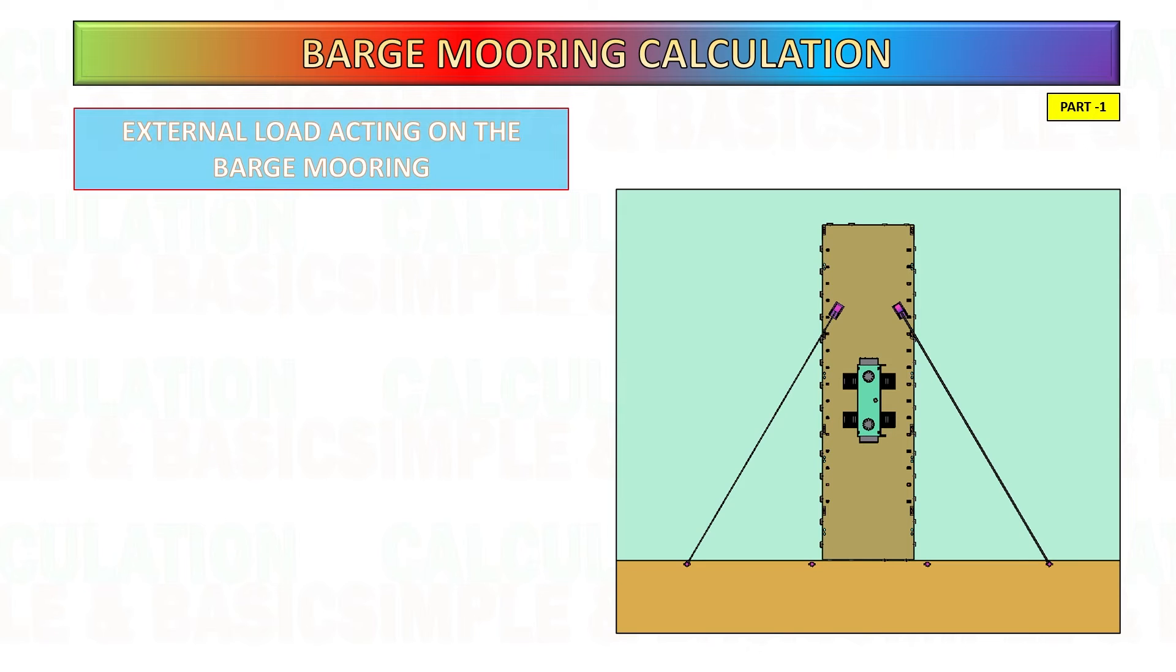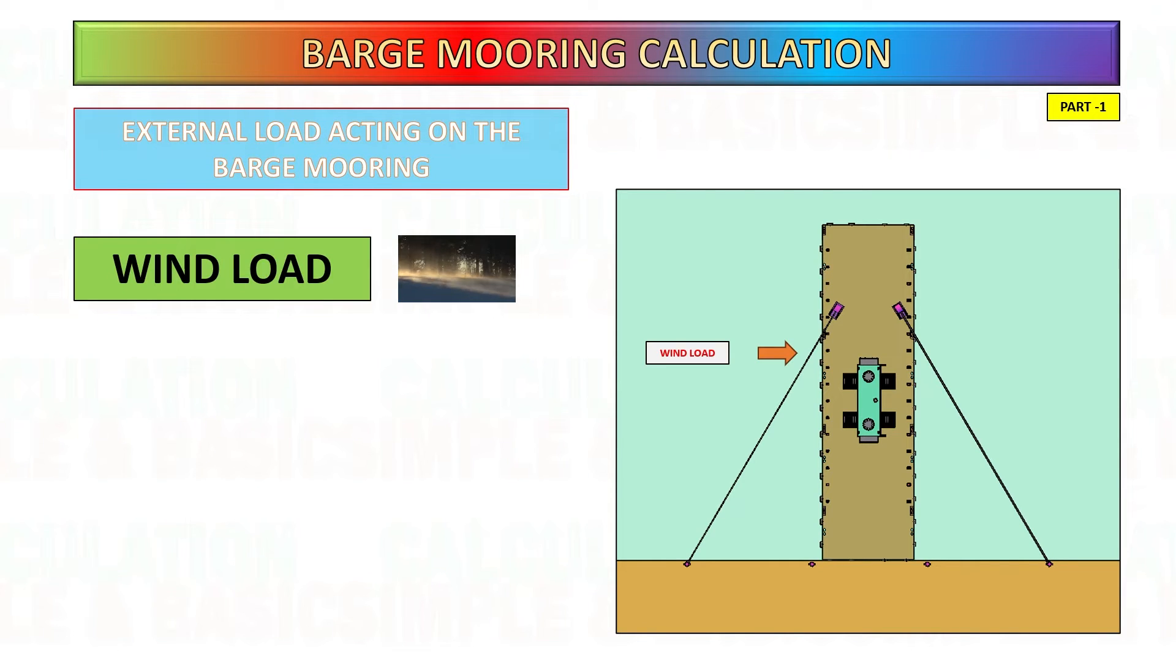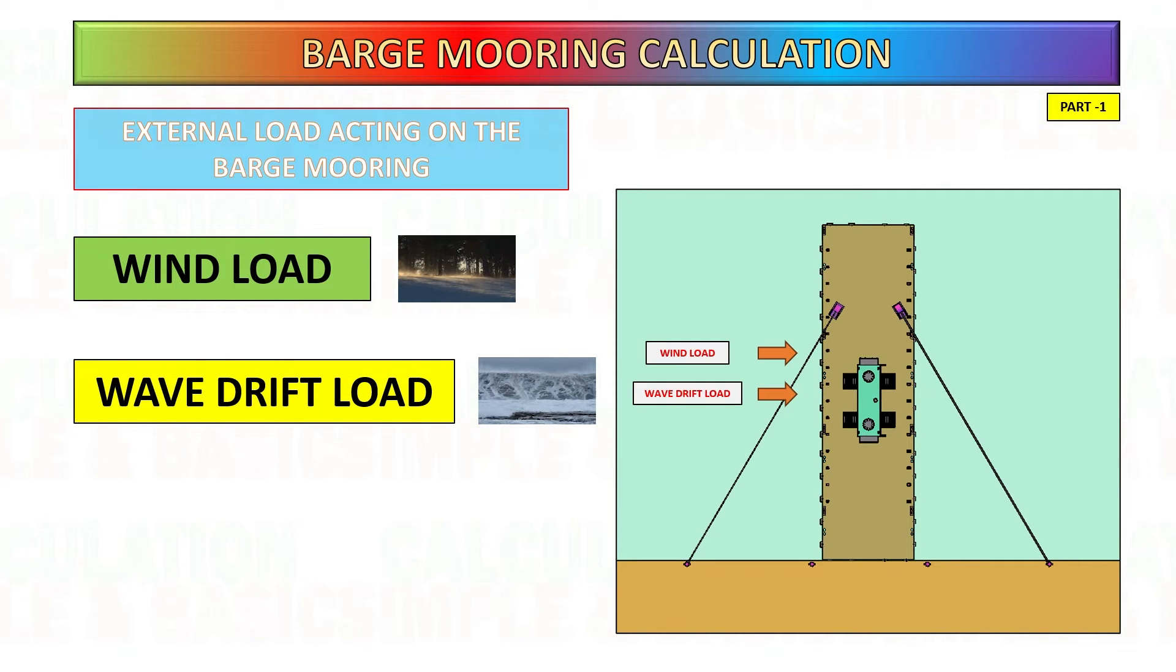This is the external forces or load that affecting the mooring line: wind load, wave drift load, and tidal current load.